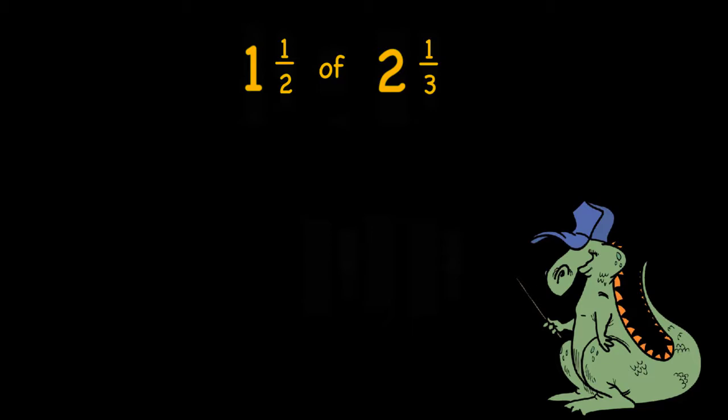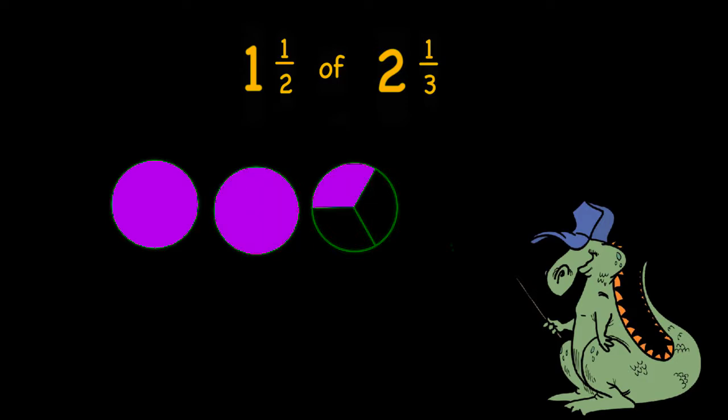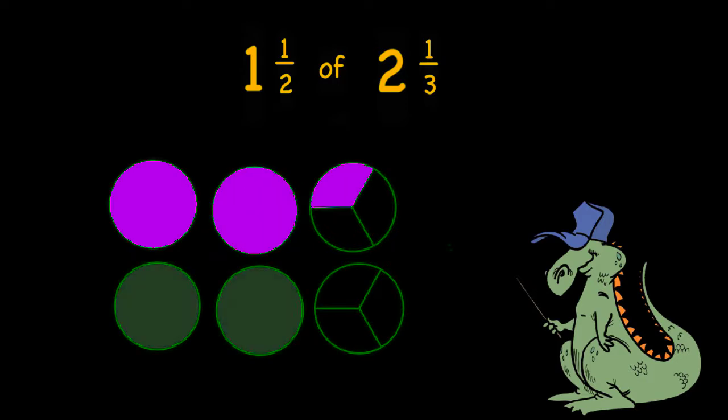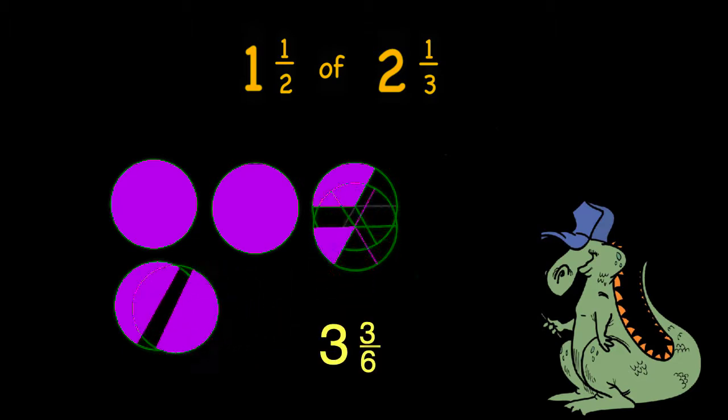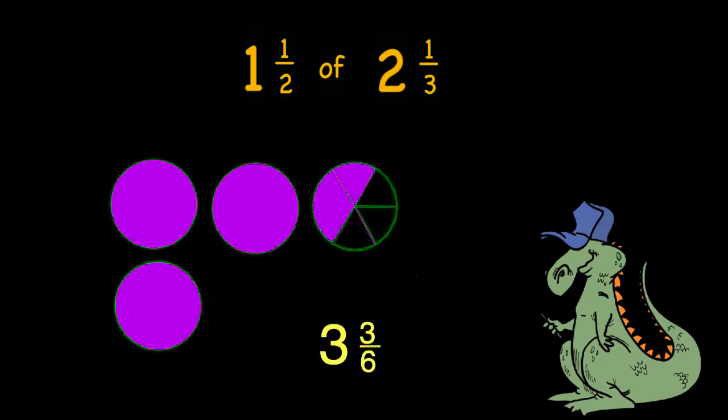I'm going to start off by using drawings. First I'll draw two and a third. I need that one time. Now I'm going to draw it a second time, but this time I'm going to take half of everything. So I have two and a third plus one and one-sixth. When I combine those I get three and three-sixths, and when I simplify that I get three and a half.